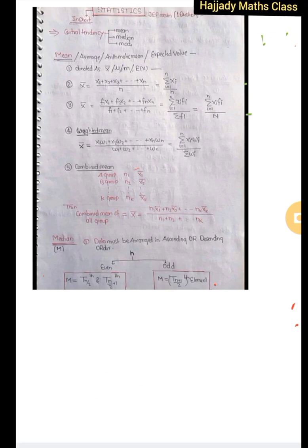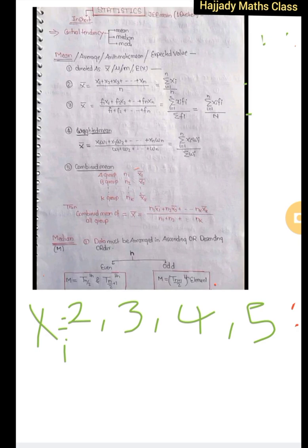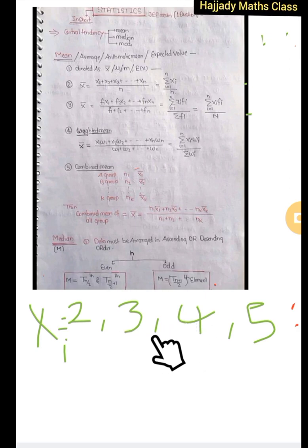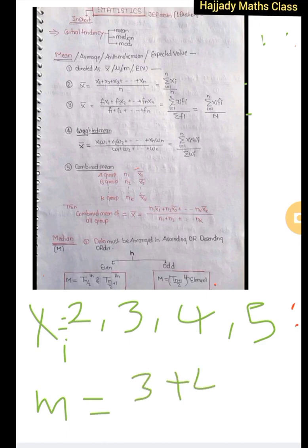If the number of observations is even — for instance, you have the values 2, 3, 4, 5 — then to calculate the median you take the average of the two middle values. The two middle values here are 3 and 4, so the median equals 3 plus 4 over 2, which is 3.5. The formula is the average of the n/2-th and (n/2 + 1)-th terms.